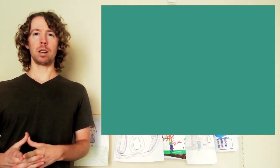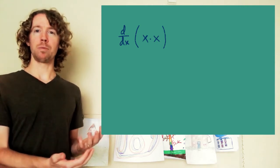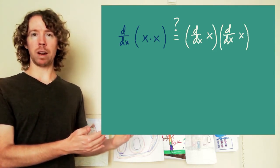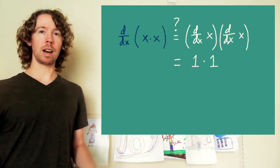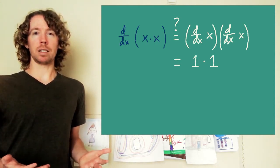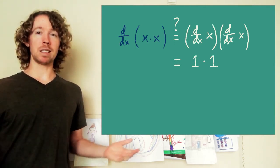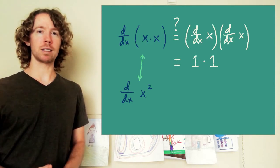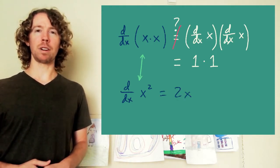A really simple example, a lot easier than e to the x times sine of x, is the derivative of x times x. If my hypothesis is true, this equals the derivative of x times the derivative of x. The derivative of x is 1, so that would just be 1 times 1. But the derivative of x times x is the derivative of x squared, which is 2x — not 1. So my hypothesis failed terribly on the first example.